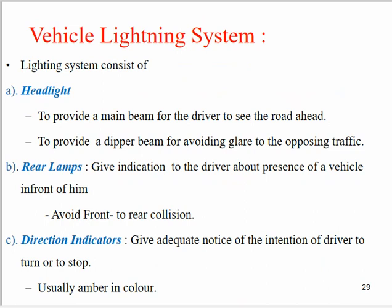Next is the vehicle lighting system. The lighting system includes the headlights, the rear lamps, and the direction indicators. The headlights provide a main beam for the driver to see the road ahead, giving a clear vision of the road during night time, and also provide a dipped beam for avoiding glare to the opposite traffic. If an opposite vehicle is travelling, the driver can use the dipped beam in order to avoid glare from the oncoming vehicle, and this also avoids front-to-rear collision by alerting the driver to visualize the vehicle moving in front of him. Third are the direction indicators.